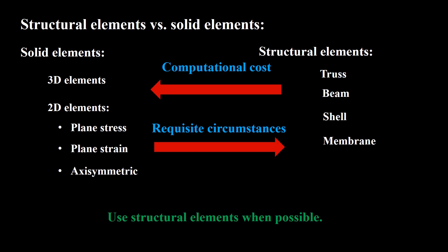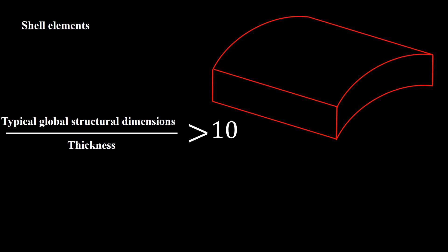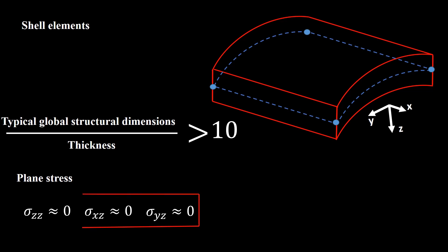In summary, if the requisite circumstances are satisfied we use structural elements to reduce computational cost. In most cases, creating the geometry with structural elements is much easier. When can we use shell elements? If the typical dimensions of our structure are at least 10 times bigger than the thickness, we may use shell elements — using a surface in the middle of the structure instead of the full 3D structure. In shell elements, bending of the cross-section is also considered, and the plane stress condition is required: out-of-plane stress components should be zero.